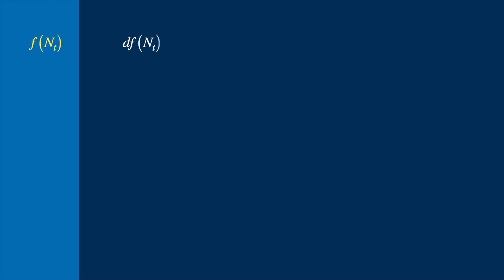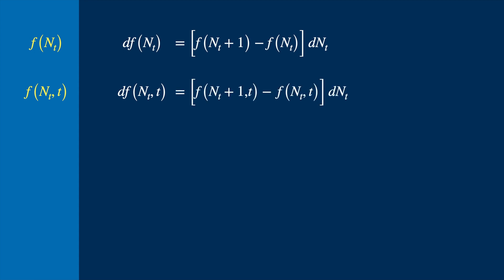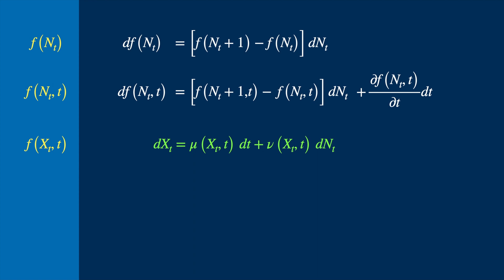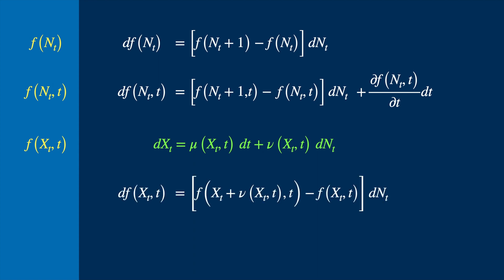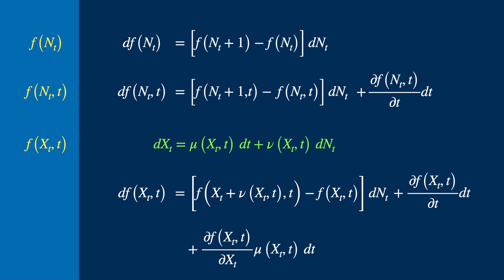In summary: if f is a function of n, its differential equals the change in function value when one jump occurs, times dn. If f is a function of n and t, its differential equals that same jump term times dn, plus the partial derivative with respect to t times dt. If f is a function of x and t where x is defined by the SDE, its differential equals the change in function value assuming a jump of size v times dn, plus the derivative with respect to t times dt, plus the derivative with respect to x times the drift rate of x.